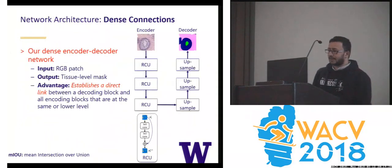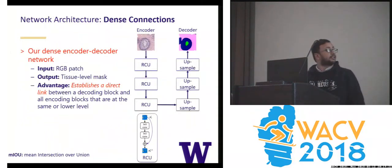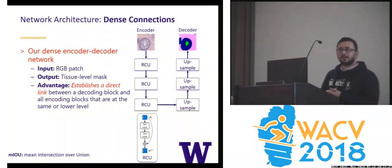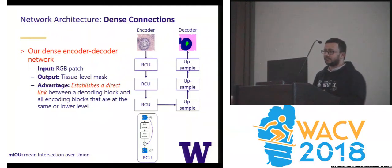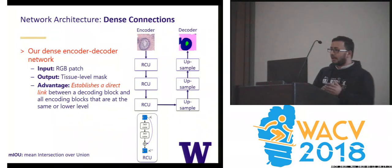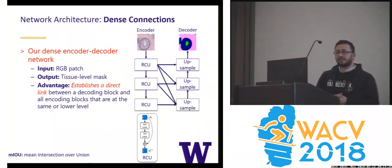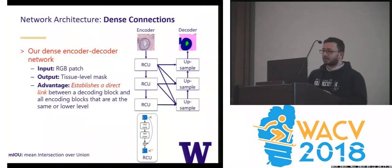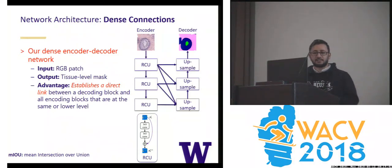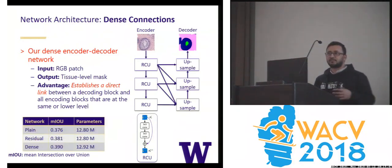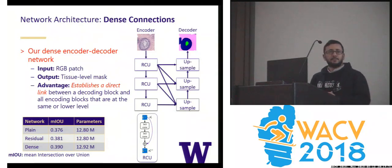On the right side is the encoder-decoder architecture, where the encoder takes an RGB image, performs convolutional and downsampling operations, and learns some representations. The decoder takes those representations and produces the segmentation mask. We introduce a direct link between a decoding block and all encoding blocks that are at the same or lower level, which improves the flow of information inside the encoder-decoder architecture and ultimately improves the accuracy.